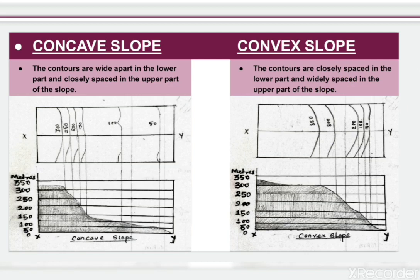Next is concave slope. In the concave slope, the contours are wide apart in the lower part and closely spaced in the upper part of the slope. In the convex slope, the contours are closely spaced in the lower part and widely spaced in the upper part of the slope.